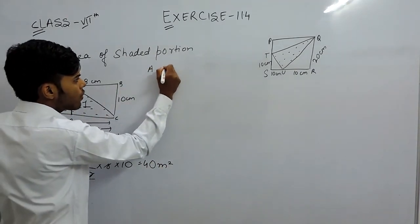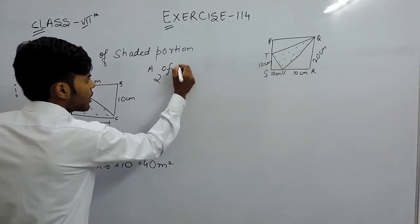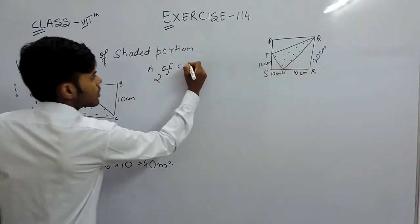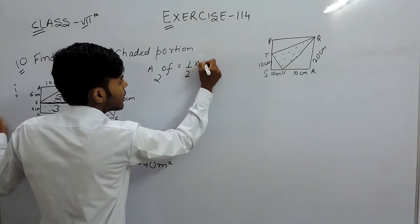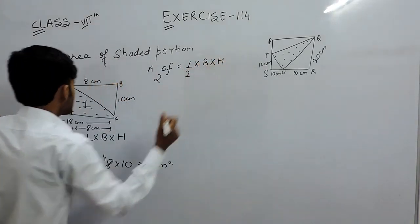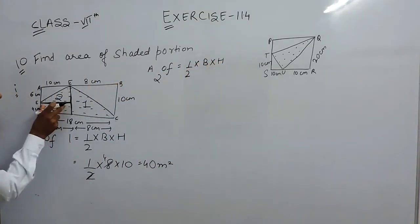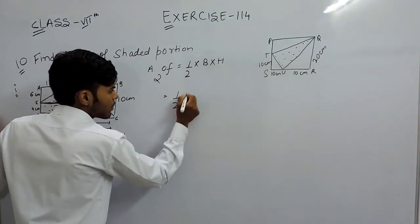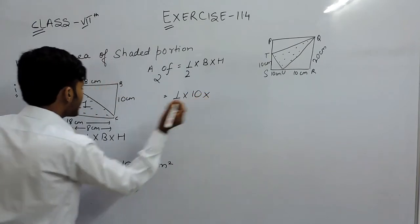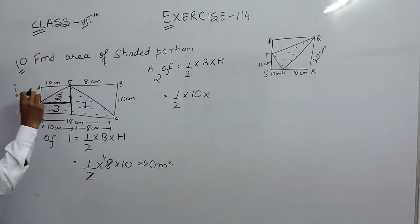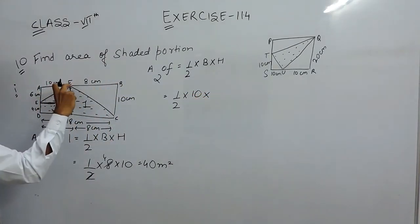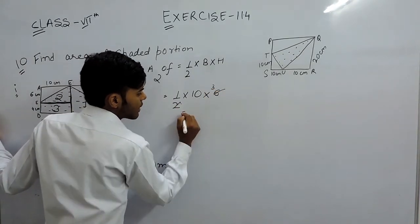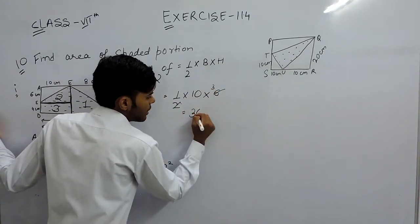Area of figure 2 — this is also a triangle. So the area is 1/2 into base into height. The base is 10 centimeters and the height is 6 centimeters. So this will be 1/2 into 10 into 6, that is 30 square centimeters.